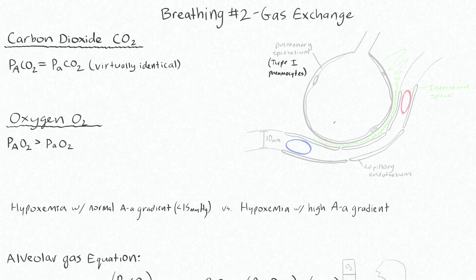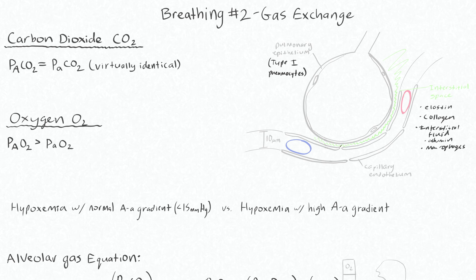There are also type 2 pneumocytes found elsewhere, and they do things like produce surfactant. Gas exchange occurs where you have these thin pulmonary epithelium. You'll also have an interstitial space — shown here in green — which contains things like elastin, collagen, and interstitial fluid. In your interstitial fluid you can have albumin and macrophages, and the junctions between capillary endothelial cells are actually large enough for macrophages to come out.